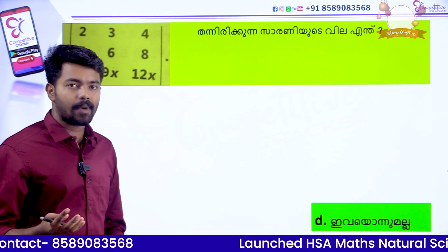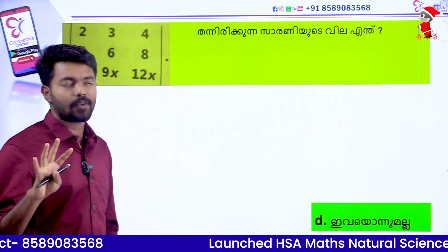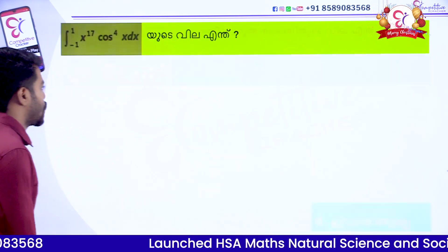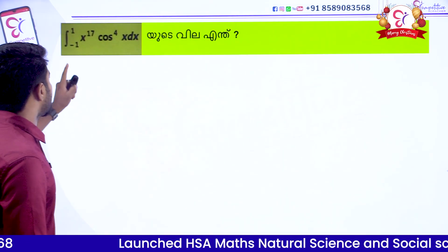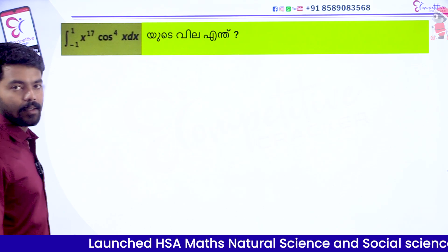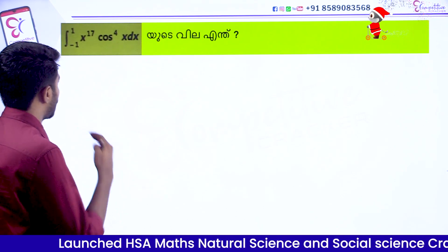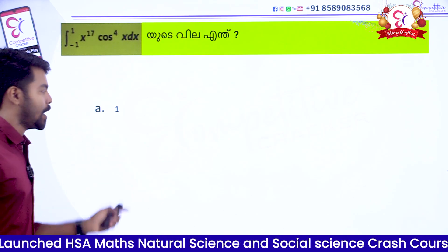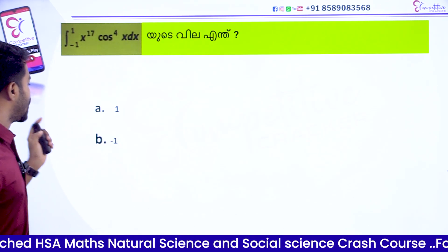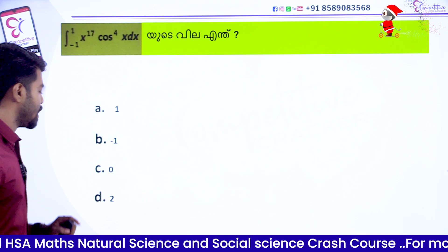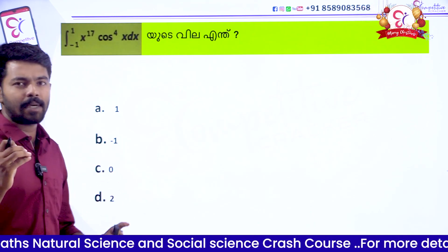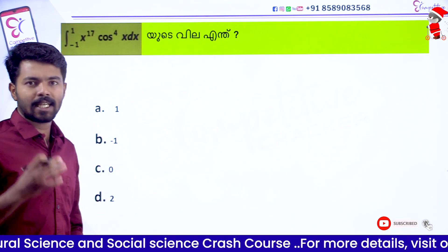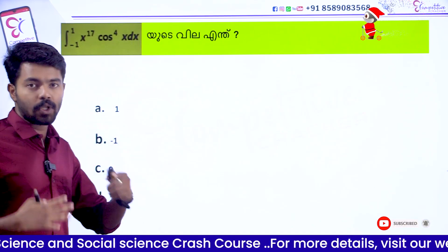The textbook is available. But if you want to read the textbook, it is the integral from minus 1 to 1 of x raised to 17 into cos raised to 4x dx. This is the textbook problem. Option A: 1. Option B: minus 1. Option C: 0. Option D: 2. This is the first step of the textbook.